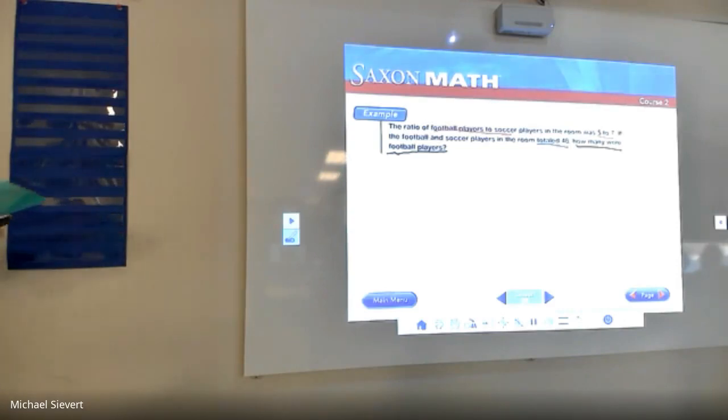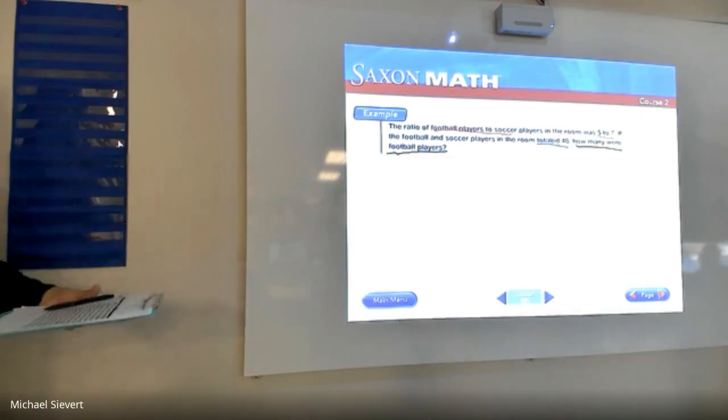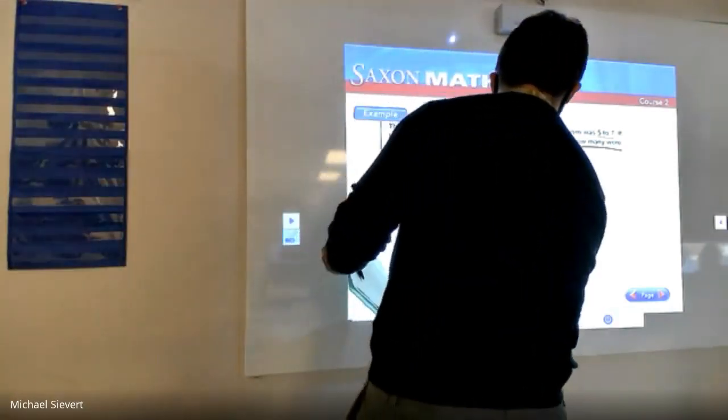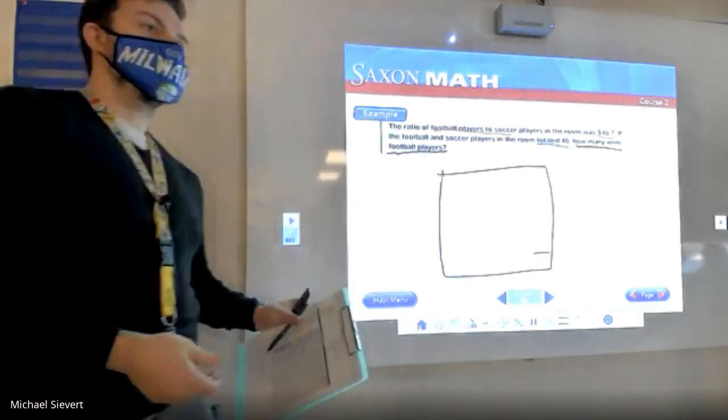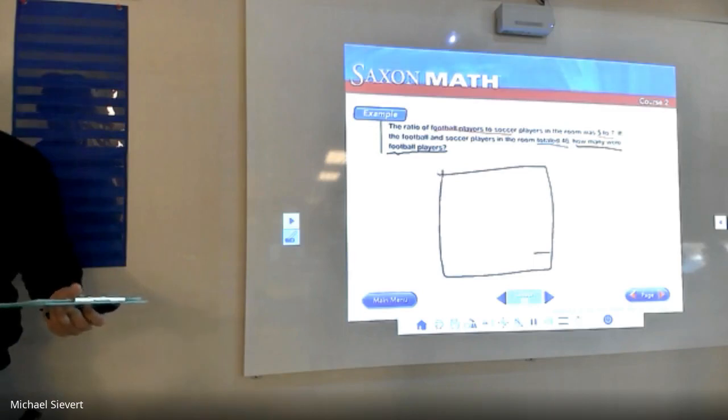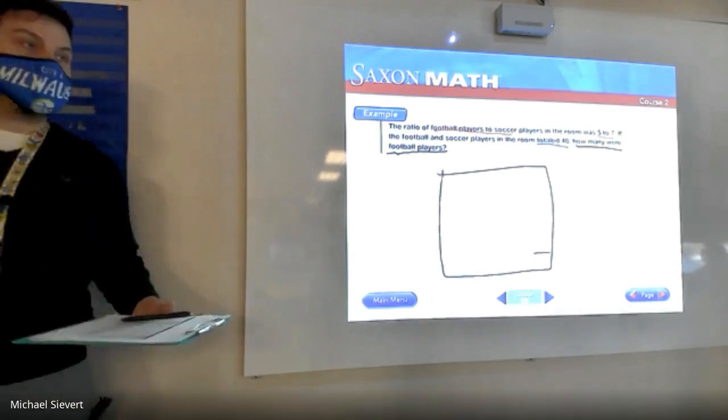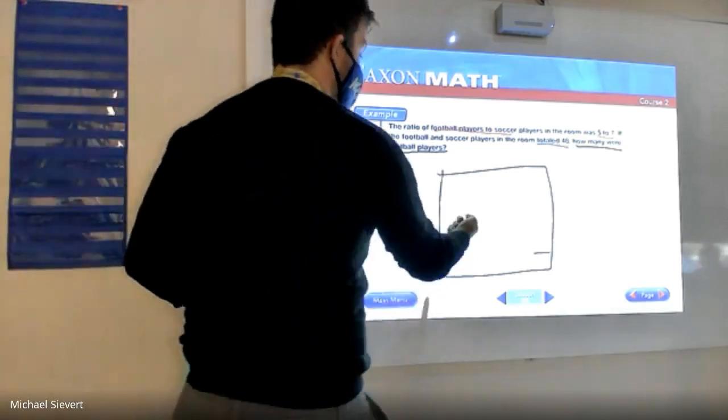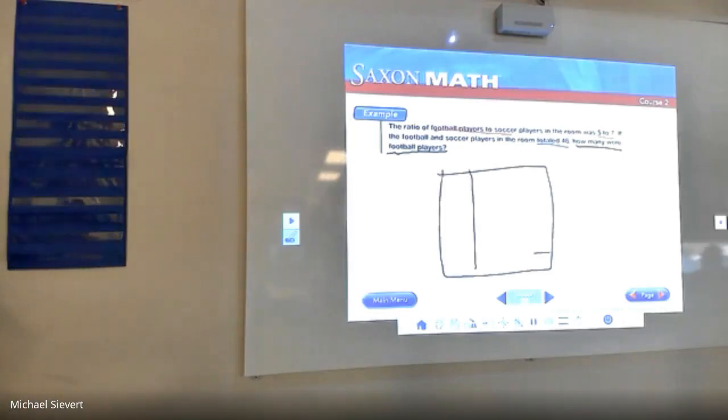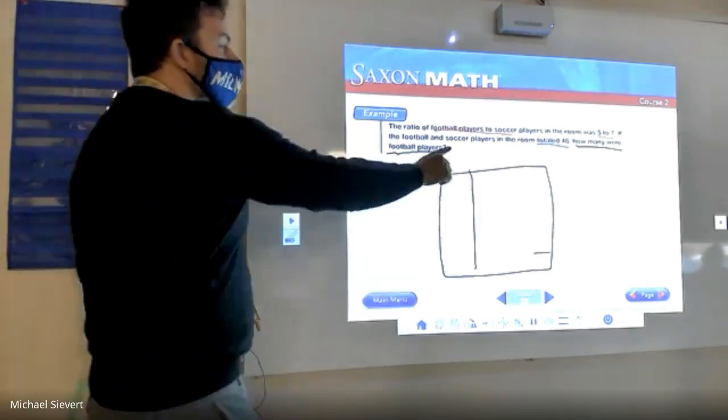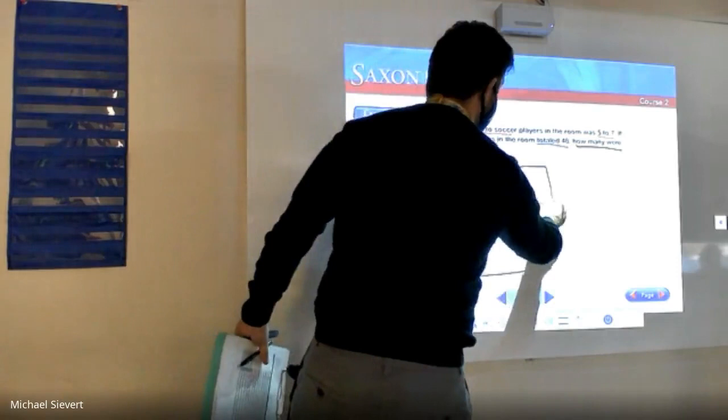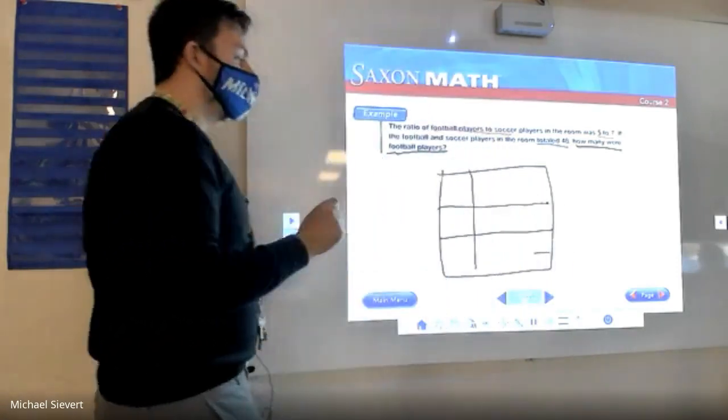Now, when you're working with ratios and tables or totals, first thing you're going to have to do is draw a box. And I better see this on your exit ticket. First, you draw a box. Now, what do you put in the box? You're going to make one line all the way down and then you've got to figure out you have football and soccer and then you need one for the total. So you're going to put two lines across for a total of three spaces.